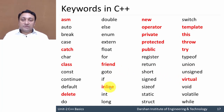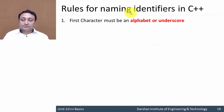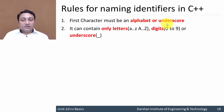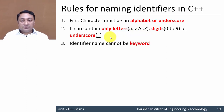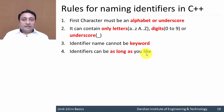Let us discuss rules for naming identifiers. The first character must be an alphabet or underscore. It can contain only letters (lowercase or uppercase), digits, or underscores. An identifier name cannot be one of the 84 reserved keywords. Unlike C language, which has a limitation of 31 characters, in C++ identifiers can be as long as you like.